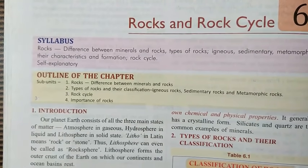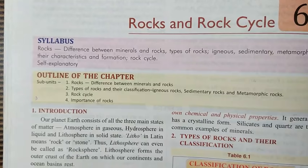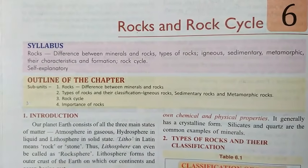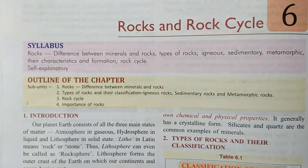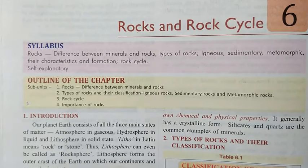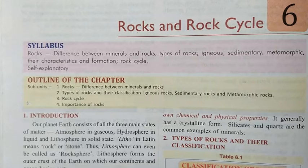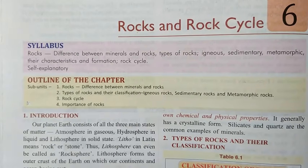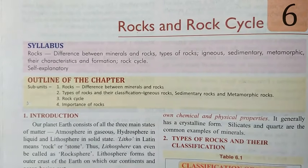As all of you know, our planet actually has three layers: the atmosphere, which is a gaseous form; the hydrosphere, which is the whole liquid water bodies; and the lithosphere, which is the solid state. The word 'litho' in Latin means rock, so this whole solid layer of the earth, including all the continents, is called the lithosphere.